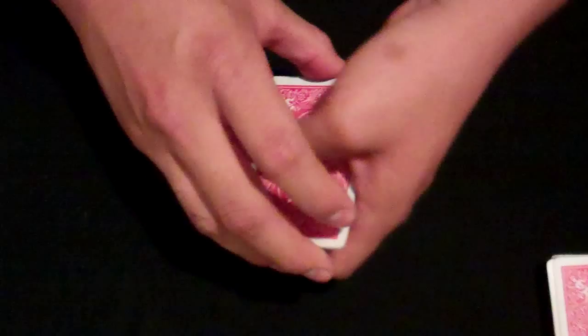Alright, for the invisible palm we need four cards. One, two, three, four. Okay, we have all four aces. Go ahead and set those in red, black, red, black order.